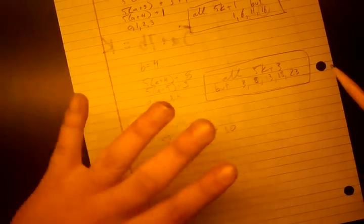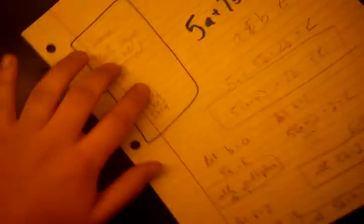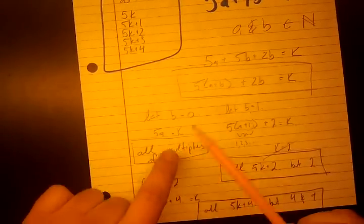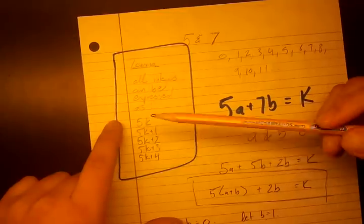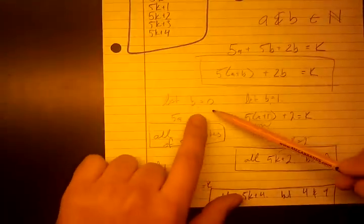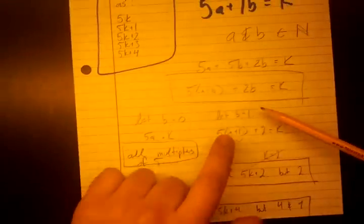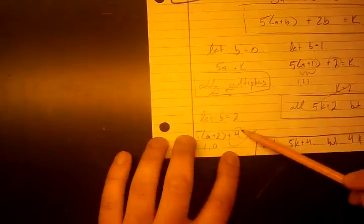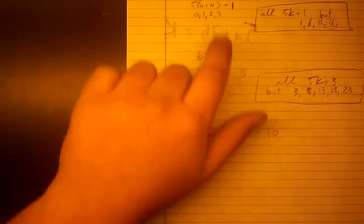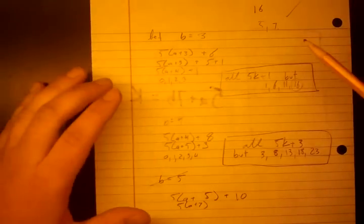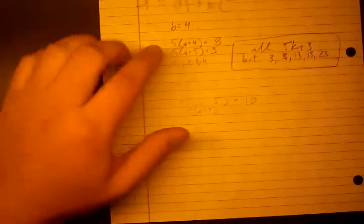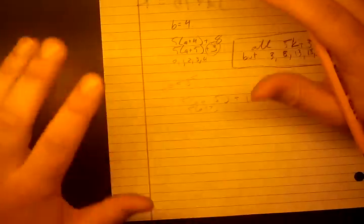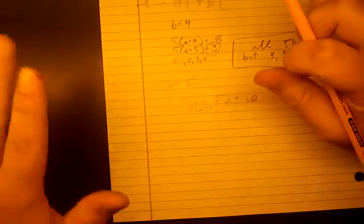When we did B = 1, our remainder, so this is the remainder when we divide by 5, this is going to be the remainder in each of those cases. So we let B = 0, the remainder was 0. We let B = 1, the remainder was 2. We let B = 2, the remainder was 4. We let B = 3, and the remainder was 1. We let B = 4, and the remainder was 3. So we've hit every single remainder that's possible when you divide by 5.